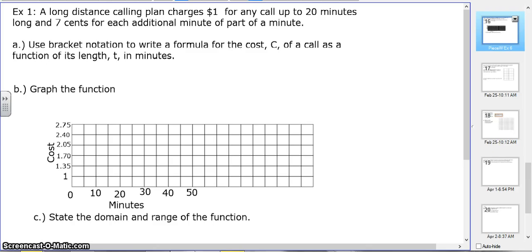In our first example, a long-distance calling plan charges $1 for any call up to 20 minutes long and 7 cents for each additional minute or part of a minute. We're going to write an equation using bracket notation to write a formula for the cost C of a call as a function of its length T in minutes. So C or F of T equals, first thing is we're going to pay $1, and when are we going to pay $1? Any call up to 20 minutes, so that's 0 less than T less than or equal to 20.